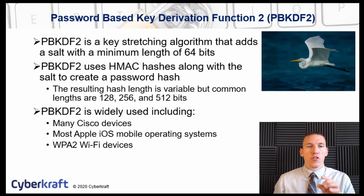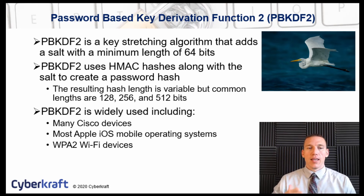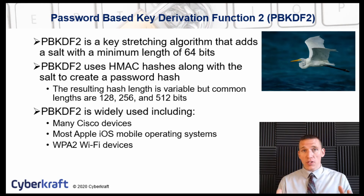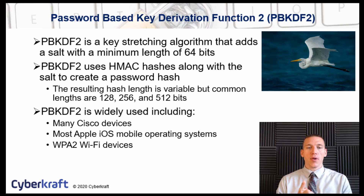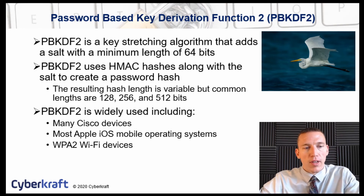The next algorithm is Password-Based Key Derivation Function 2, or PBKDF2. This key stretching algorithm adds salt with a minimum length of 64 bits. PBKDF2 uses HMAC hashes along with the salt to create a password hash, and the resulting hash is either 128, 256, or 512 bits. PBKDF2 is widely used outside of Linux — most Cisco devices use it, Apple iOS uses it, and WPA2 Wi-Fi devices use it to store password hashes when authenticating to a wireless network.